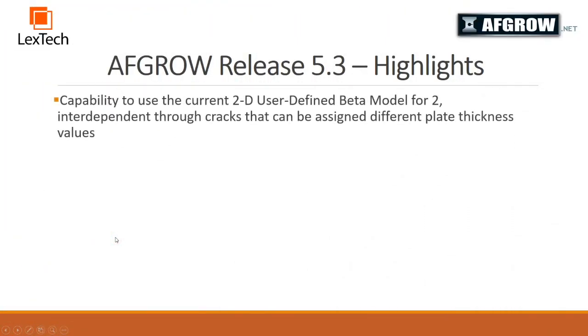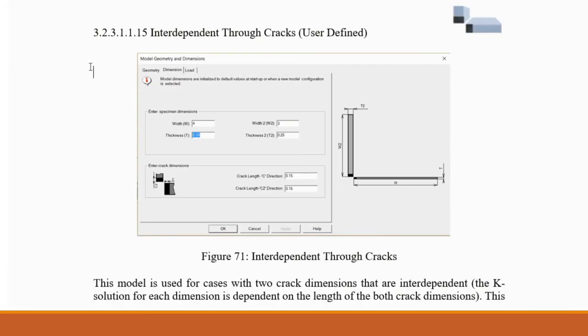We have also added a new classic model that allows users to use the capability of the current 2D user-defined beta models for two interdependent through cracks. As you can see, this model allows you to define two different plate thicknesses and widths along with the crack lengths that correspond to the plates.